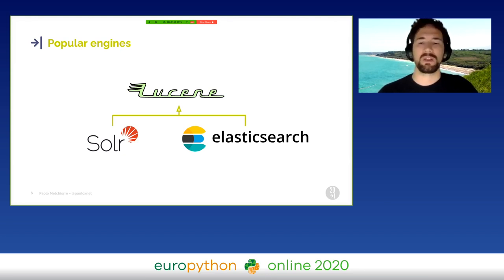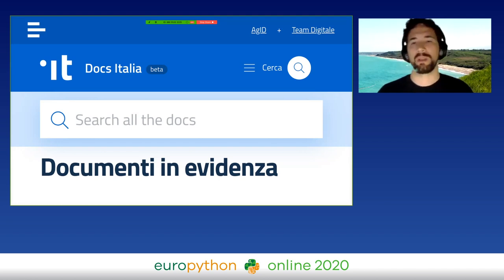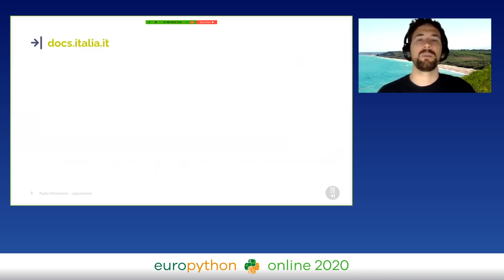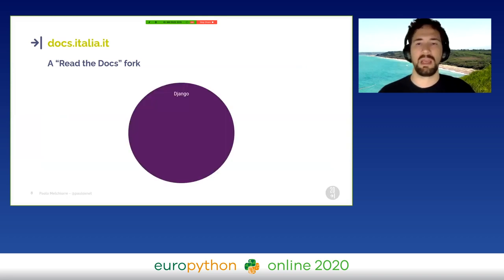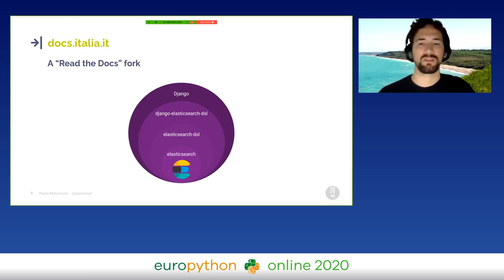The last big project where I used one of them is DocsItalia, an Italian government website to find public documents. I worked on this project with my colleagues to improve the search function. Under the hood, DocsItalia is a fork of the open-source project ReadTheDocs. So as the original project, it's a Django-based platform, and it requires a lot of Python packages to access the Elasticsearch instance asking for results. The search function is working very well now, but we can consider this a complex solution.